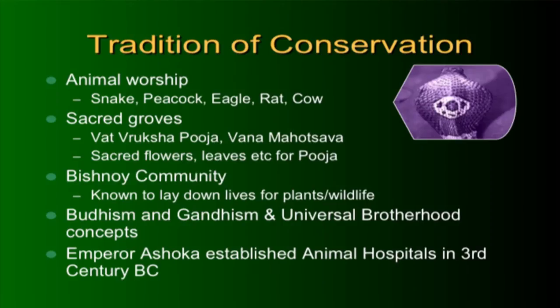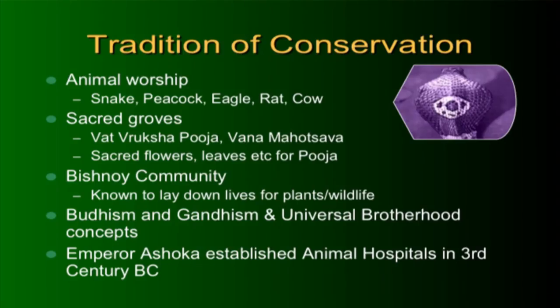Traditionally we worshipped animals — Nag Devata, peacock as Kartikeya's vahana, rat associated with Ganesha, cow worship. Sacred groves like Kerala's kavus and Maharashtra's devrais acted as genetic pools — they were considered God's forests, not to be cut. Buddhism and Gandhism talk about universal brotherhood. The Bishnoi community and the Chipko movement reflect this ethos.